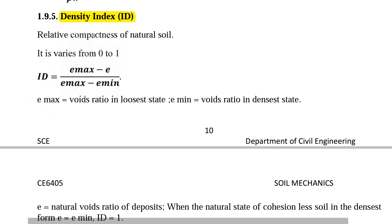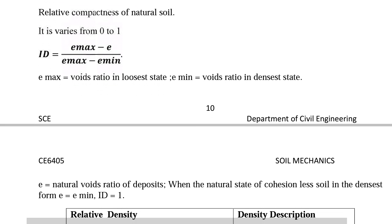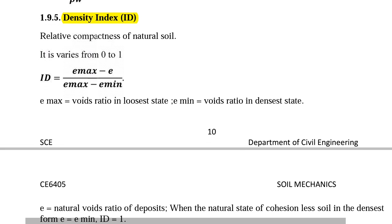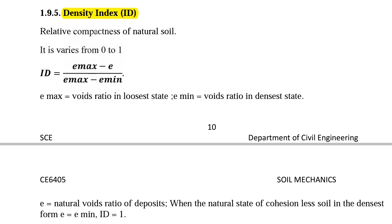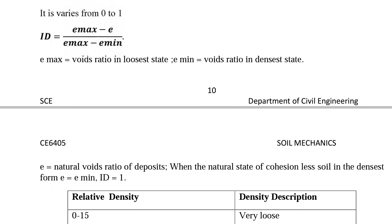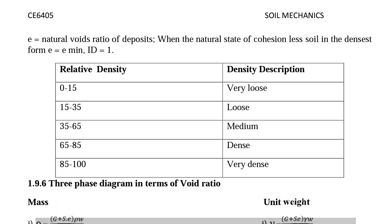Next we will see density index, also known as relative density index. It varies from 0 to 1. Density index ID is equal to E max minus E divided by E max minus E minimum. E max is the void ratio in the loosest state, E minimum is the void ratio in the densest state, and E is the natural void ratio of the deposit. When the natural state of cohesionless soil is in the densest state, E equals E minimum and hence density index equals 1.